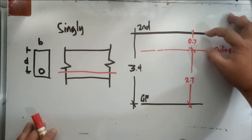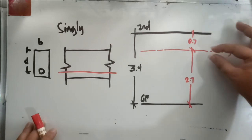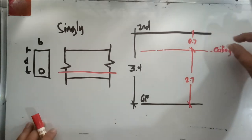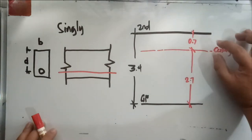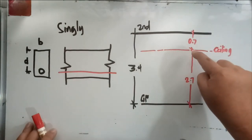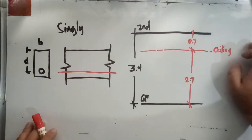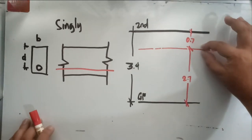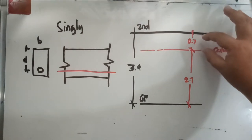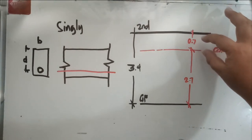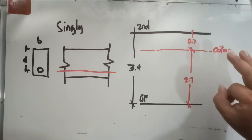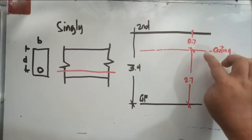That 0.7 meters must accommodate mechanical ducting, electrical conduits, hangers, ceiling joists, and furring. The minimum ceiling finish is about 50mm, so the 0.7 meters is shared among mechanical, electrical, structural, and architectural ceiling components.